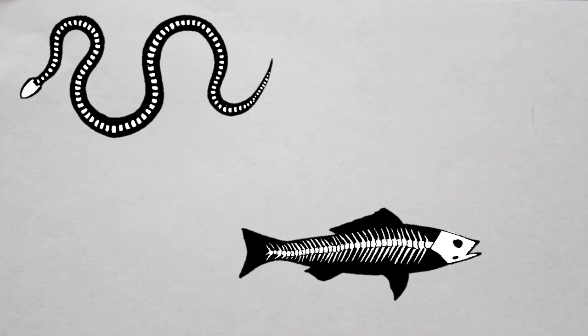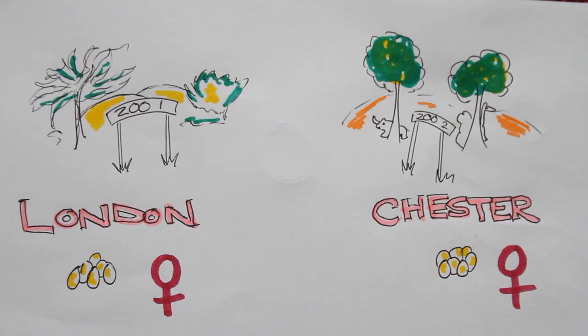What may surprise you is that it has now been seen in vertebrates — animals with backbones — and these include snakes, fish, and quite famously Komodo dragons. Two female Komodo dragons in two separate English zoos both produced fertilised eggs without mating in the same year as each other.